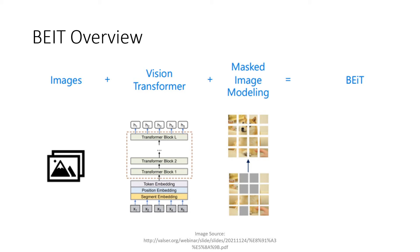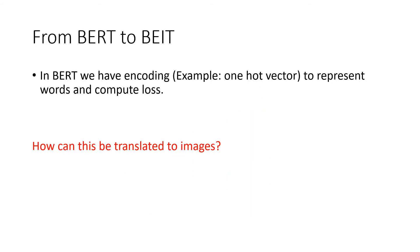The masked image modeling is equivalent to masking words as we have seen in BERT. How do we go from BERT to BEIT? In BERT, we compute the loss using one-hot vector representation over a dictionary space. The question arises: what is the equivalent in images? In images, we do not have a dictionary — there is no pre-existing vocabulary for a masked patch in an image, whereas a word can be found in a dictionary.